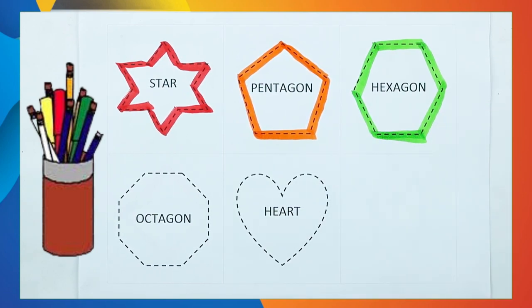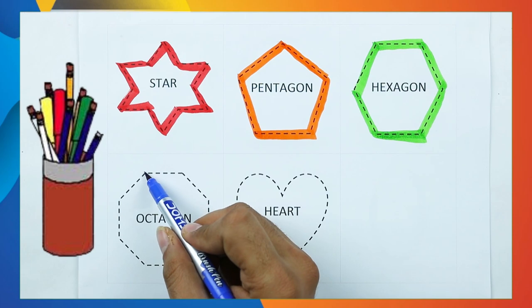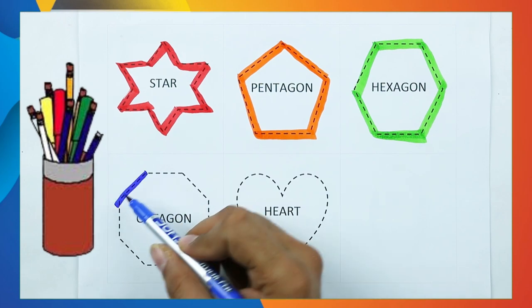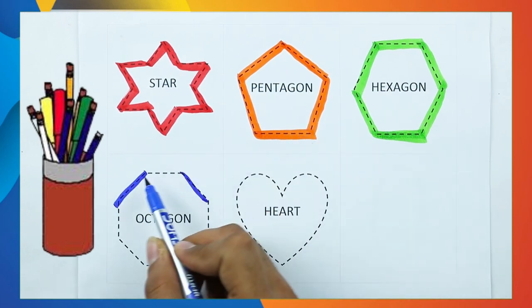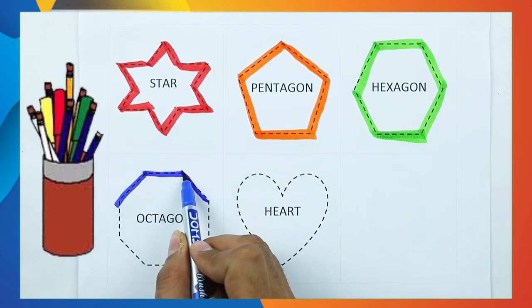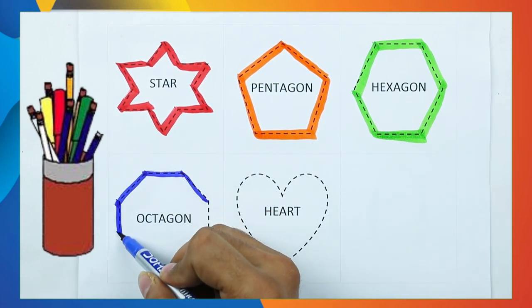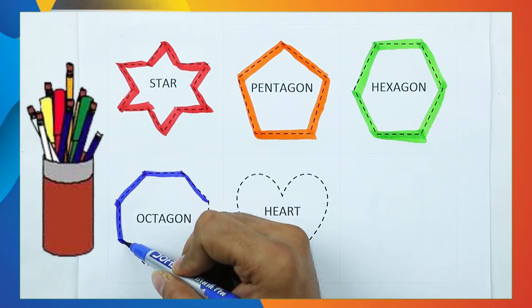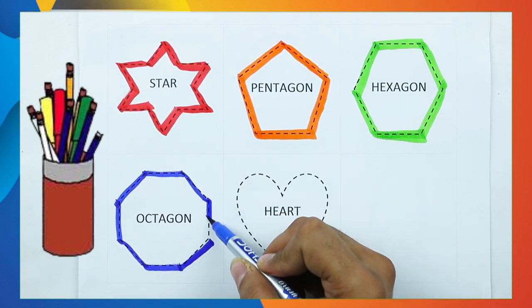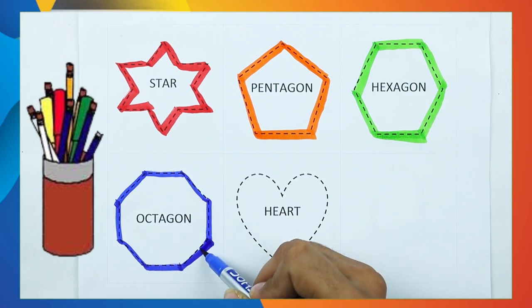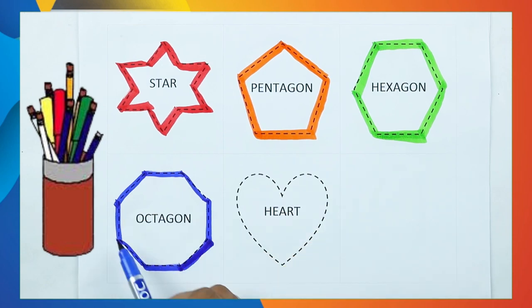Octagon. One line, two line, three line, four, five, six, seven, eight. Eight lines means octagon.